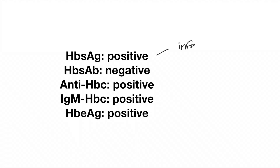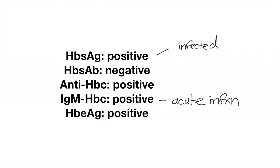In this next example, the person is positive for surface antigen, meaning they are infected. Surface antibody is negative, which makes sense as they are not immune. Core antibody is positive, which also makes sense since they are currently infected. The core antibody is positive for IgM, indicating this is an acute infection. The E antigen is also positive, meaning this person is not only acutely infected but also highly infectious.